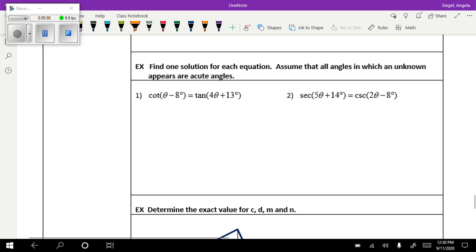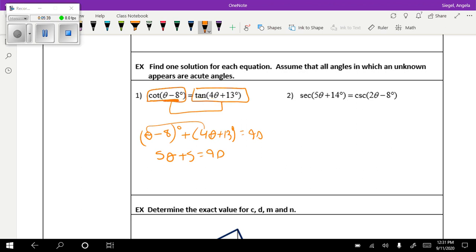So this is another form that it will appear. This is a little bit more difficult, but it's not too bad at all. Remember, we are not setting these equal to each other. This whole thing is equal to this whole thing. But don't forget that these two values are complementary of each other. So the way I'm going to set this up is this angle plus this angle is equal to 90 degrees. We have 5 theta, and then negative 8 plus 13, that's 5, equals 90. Then just solve for theta. Theta is going to equal 17. Go ahead and try number 2. You should have gotten theta equals 12.